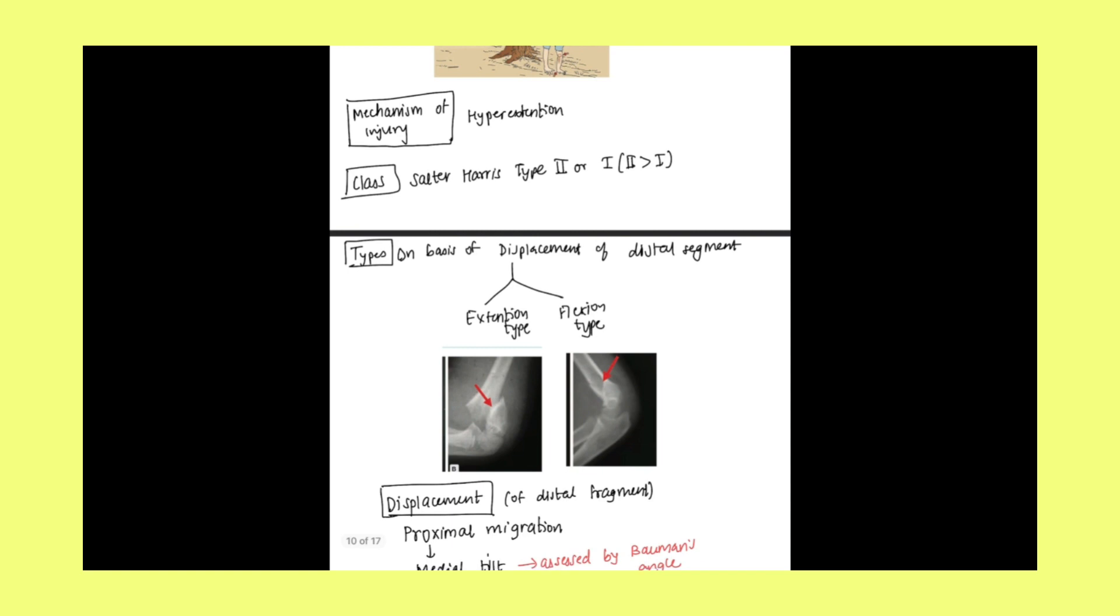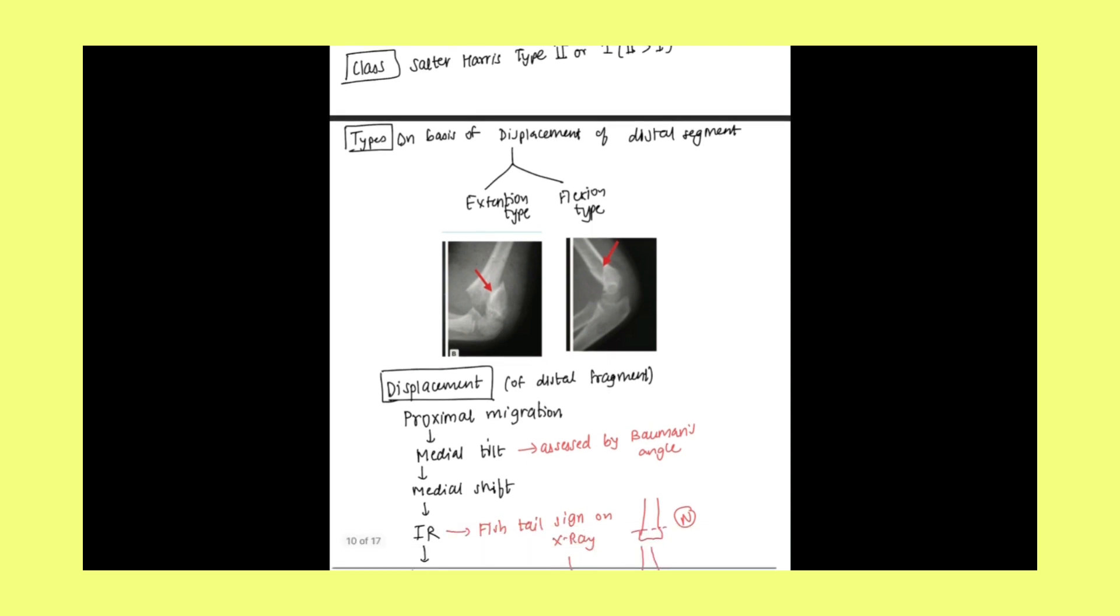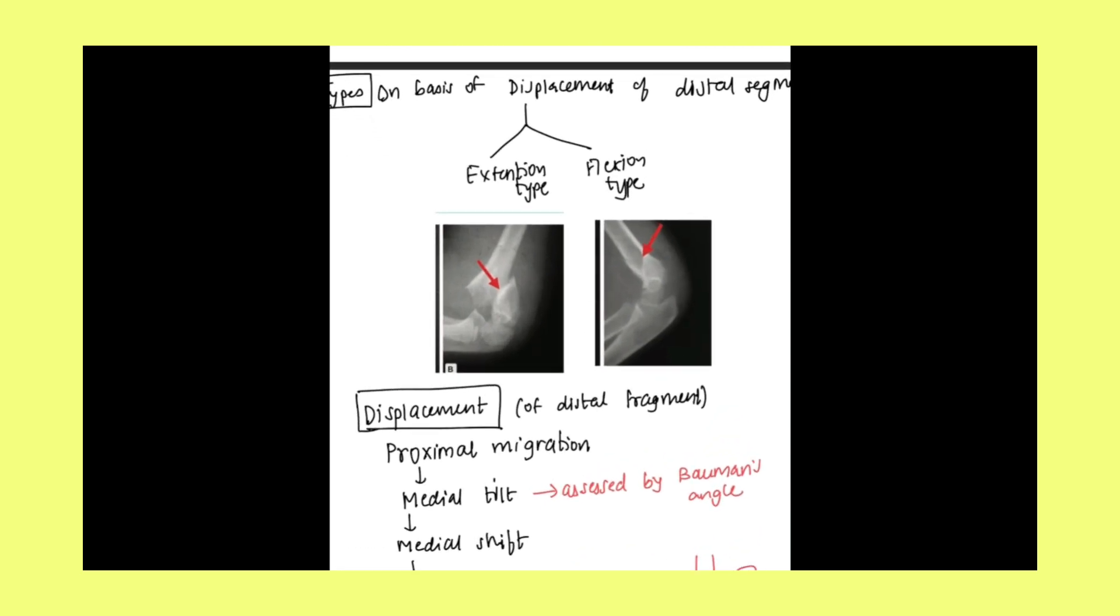Coming to types of supracondylar fracture of humerus. On the basis of displacement of distal segment, it is divided into two types: extension type and flexion type. Essentially, all the supracondylar fracture of humerus are extension type. Flexion type is very rare. As you can see, this is the distal fragment. It is displaced, it is extended posteriorly. Extension type and this is the flexion type.